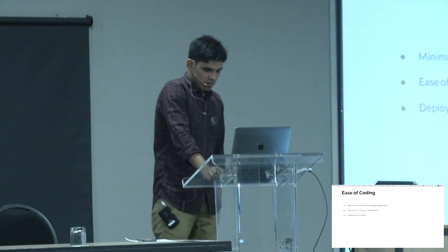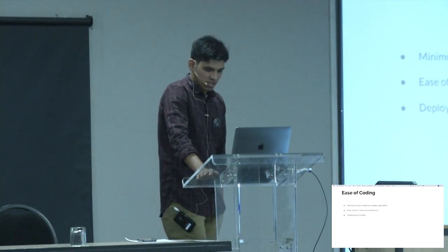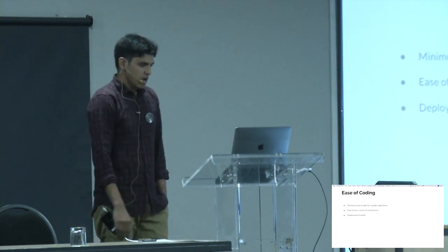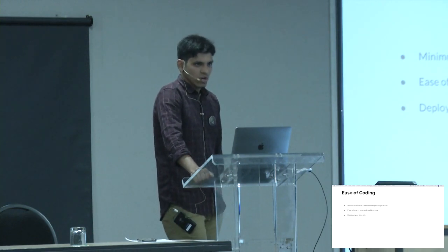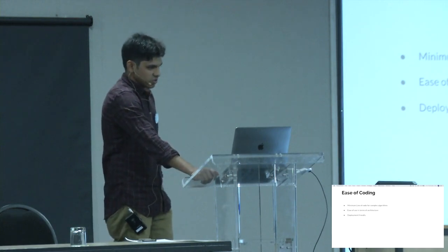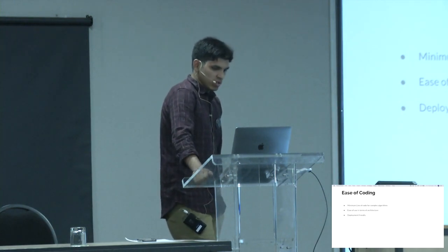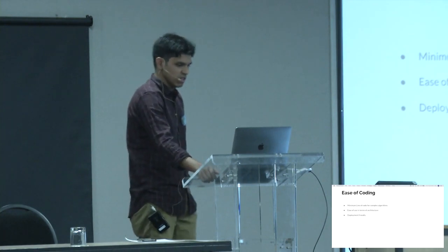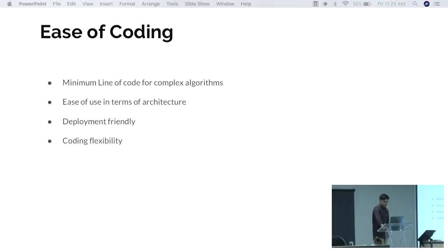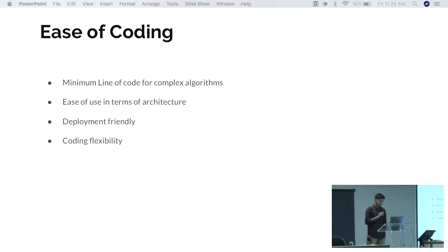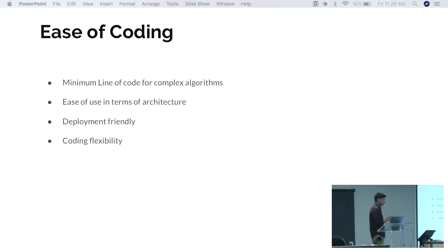The third sub-parameter is deployment friendliness. Once you build software, deployment is a very hectic task — code gives no appreciation unless it is deployed in the industry. The easier it is to deploy, the shorter the software development cycle. Fourth is coding flexibility, which is especially important for researchers developing something that has never existed before. You need very low-level coding capability to implement any function, whether or not it exists in the framework.